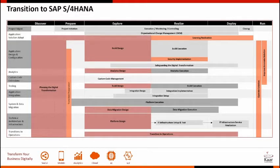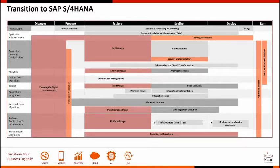Now let's look at the x-axis — the Activate methodology phases. The Discover phase, or Assess phase as we call it, is primarily about building a business case and getting approval to start the project. It typically happens a couple of months or even a quarter before the project actually starts. The more you invest in the discovery or assess phase, the smoother your conversion project will be. This phase also helps you evaluate the complexity of the conversion and its feasibility.